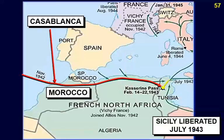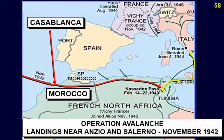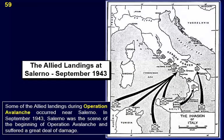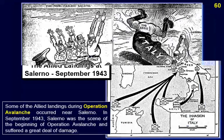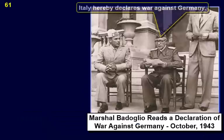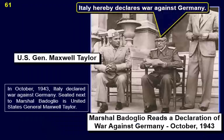Sicily was invaded and liberated in July 1943. Operation Avalanche — the invasion of the Italian peninsula — started with landings near Anzio and Salerno. Some of the Allied landings during Operation Avalanche occurred near Salerno in September 1943. Salerno was the scene of the beginning of Operation Avalanche and suffered a great deal of damage. In September 1943, Marshal Pietro Badoglio, acting as Italy's Prime Minister, signed an armistice with the Allied forces and Italy surrendered unconditionally. In October 1943, Italy declared war against Germany.